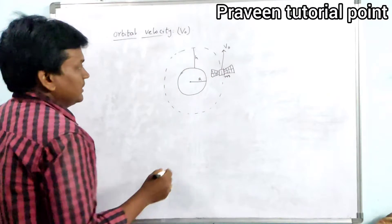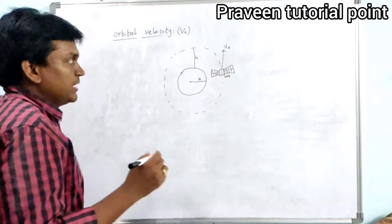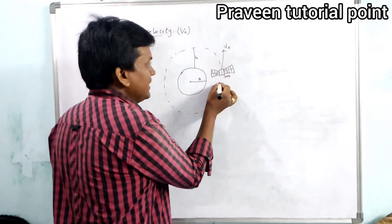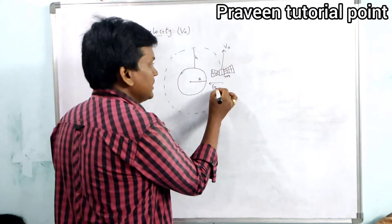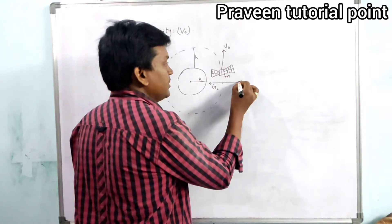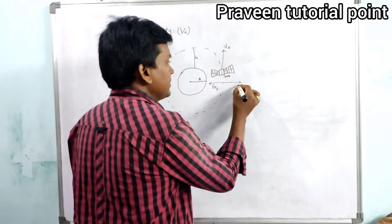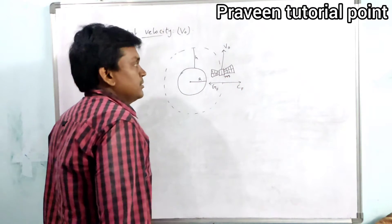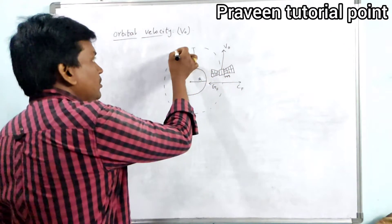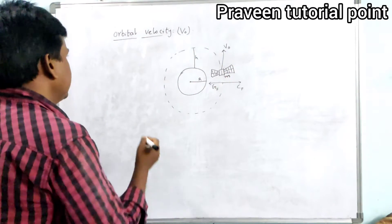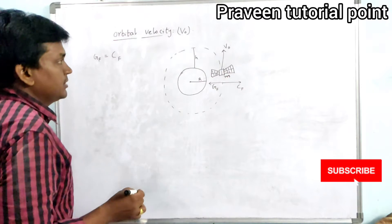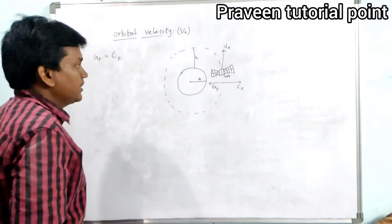As it is revolving around the Earth in the orbit, definitely it should have two forces. One force will act inward — the inward force is gravitational force. And definitely there should be an outward force acting on this satellite, that is centrifugal force.